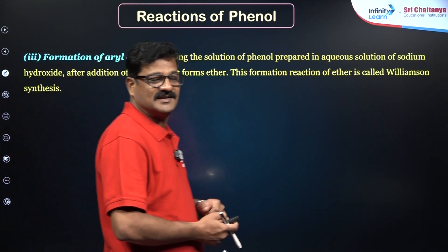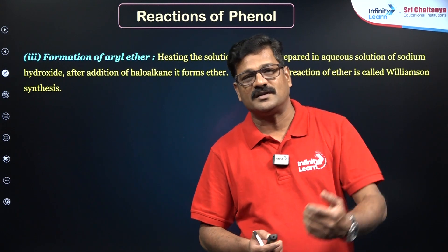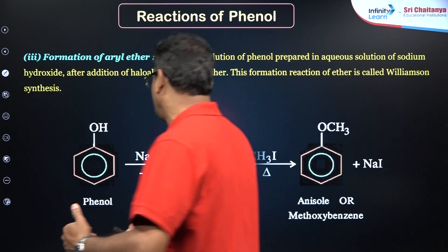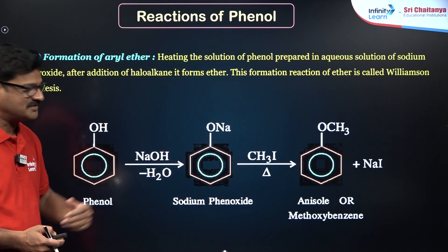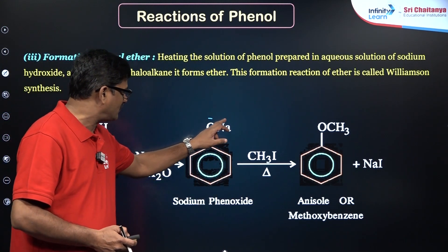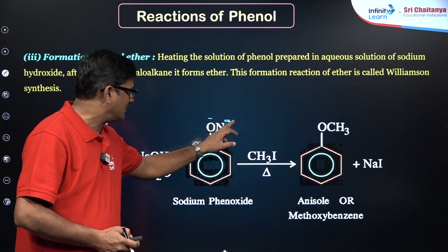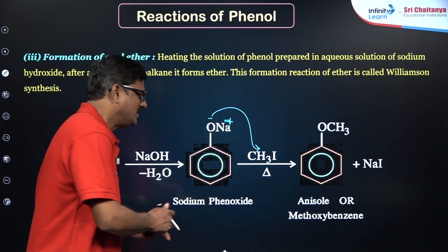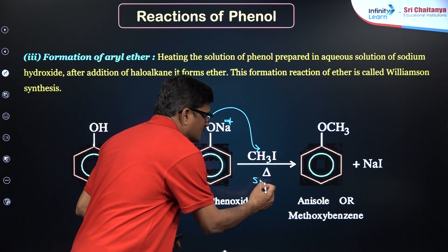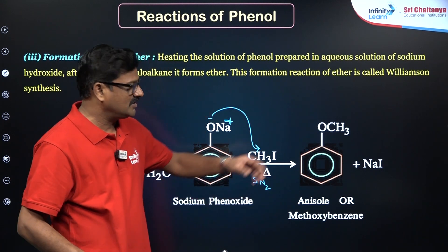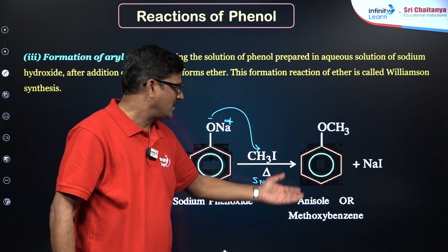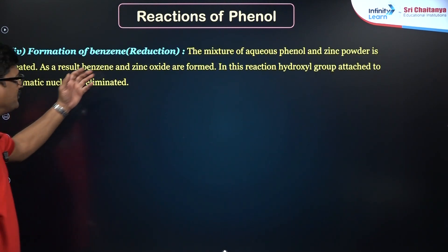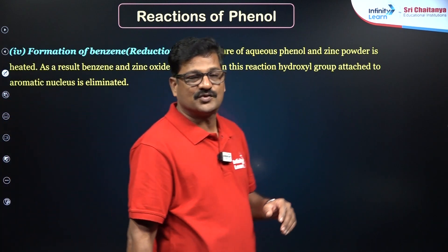Formation of aryl ethers — the most important reaction is preparation of anisole by Williamson ether synthesis. Phenol reacts with sodium hydroxide to get sodium phenoxide, which is a very good nucleophile. This nucleophile reacts with methyl iodide by an SN2 reaction to give methoxybenzene, also called anisole.